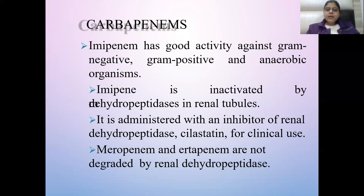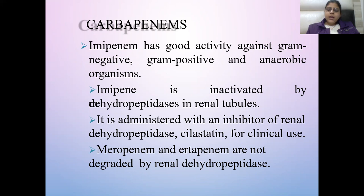Carbapenems: Imipenem is effective against gram-negative, gram-positive, and anaerobic organisms. In humans, imipenem is deactivated by the dihydropeptidase enzyme in the kidneys, so it is given with cilastatin — an inhibitor of dihydropeptidase — for clinical use. Meropenem and ertapenem are not degraded by renal dihydropeptidase, so cilastatin is not required with them — only imipenem requires cilastatin.